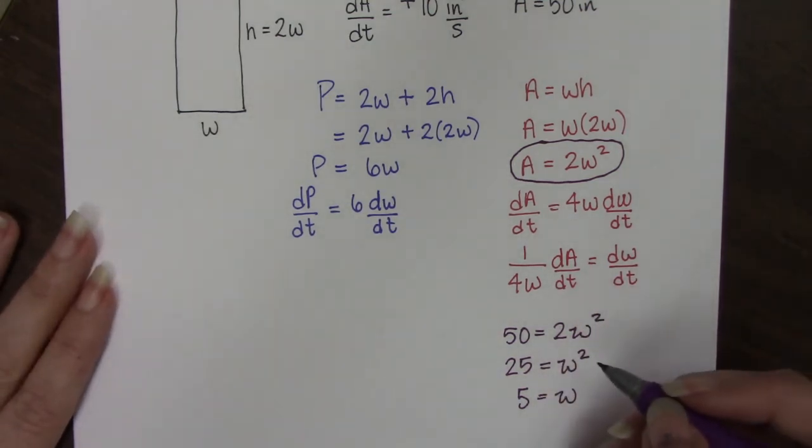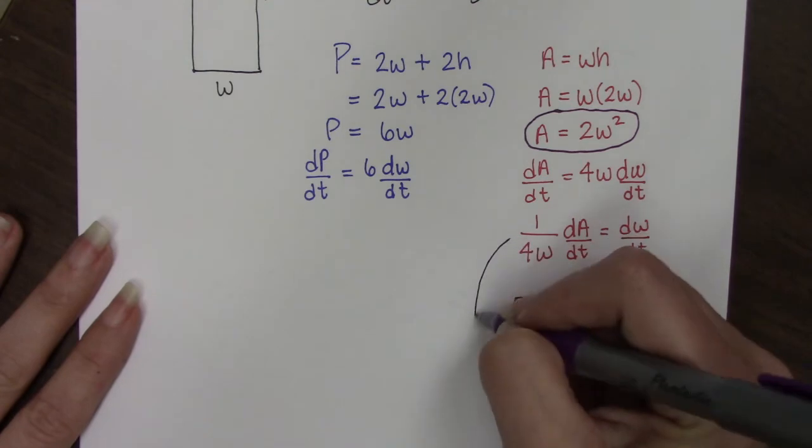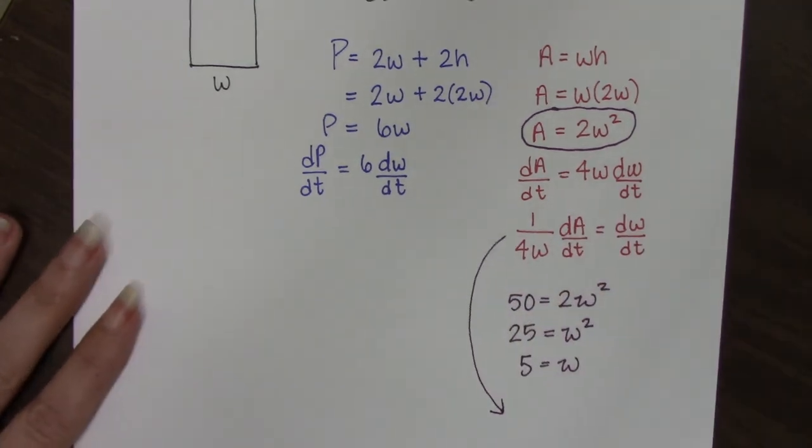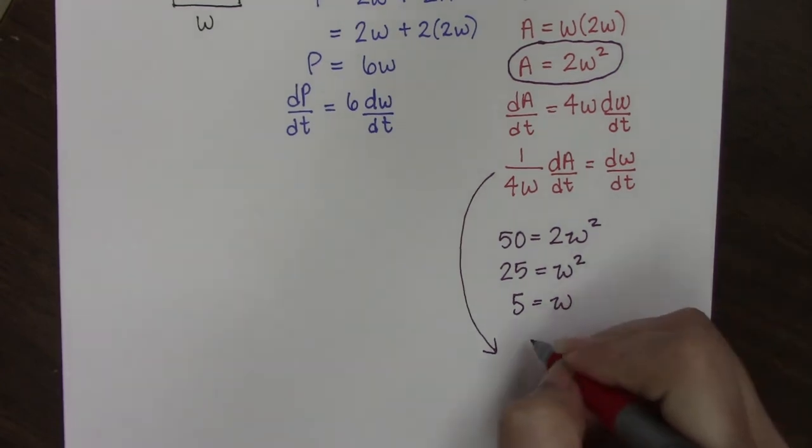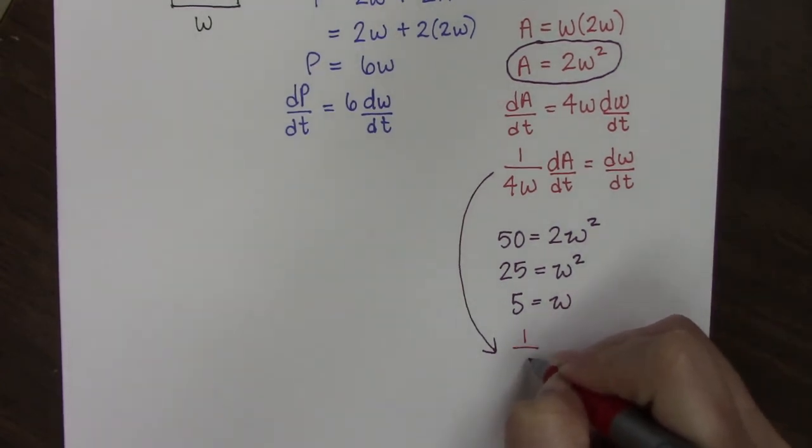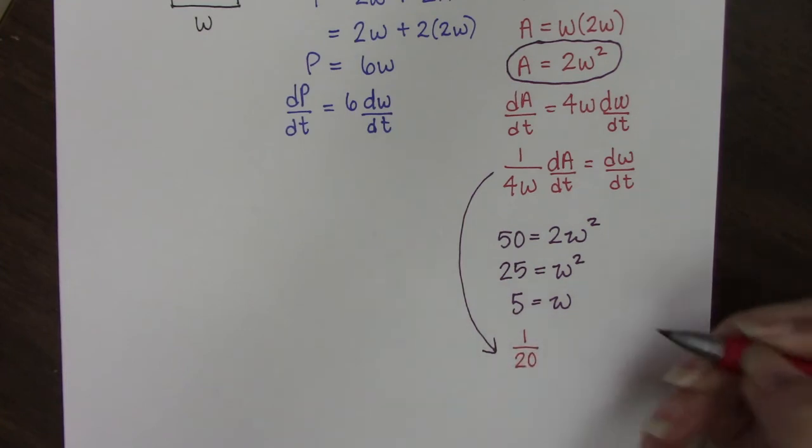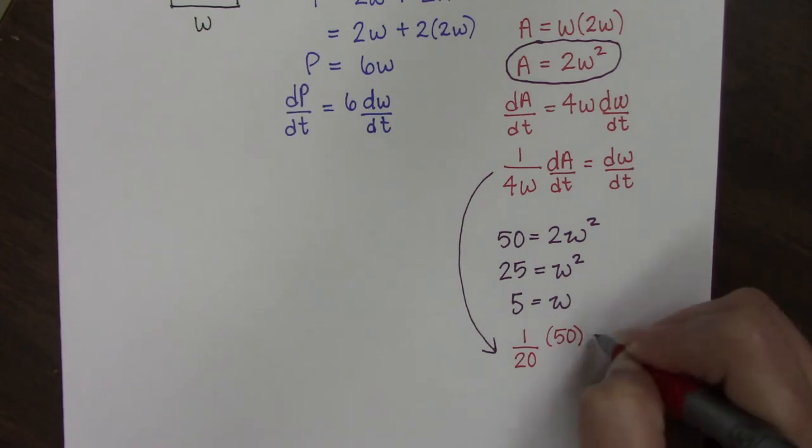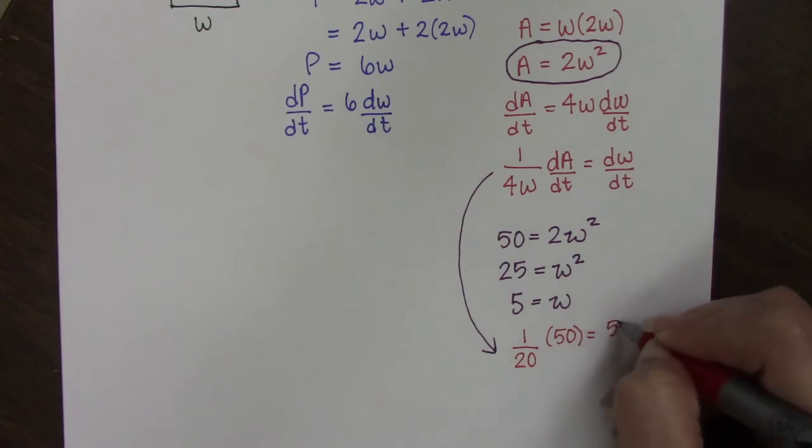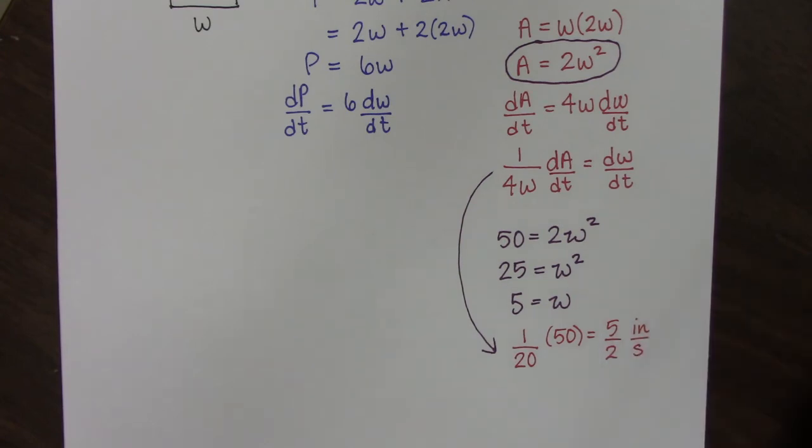So now I can come back to this equation and I can solve for dW/dt. So 1 over 4 times 5, which is 20, times dA/dt, which is 50, will give me 5 halves and this will be in inches per second. So that is my dW/dt.